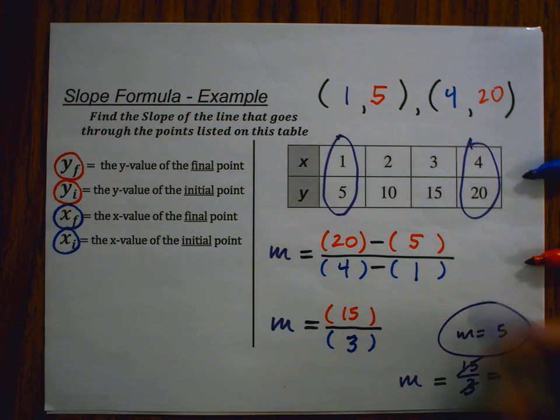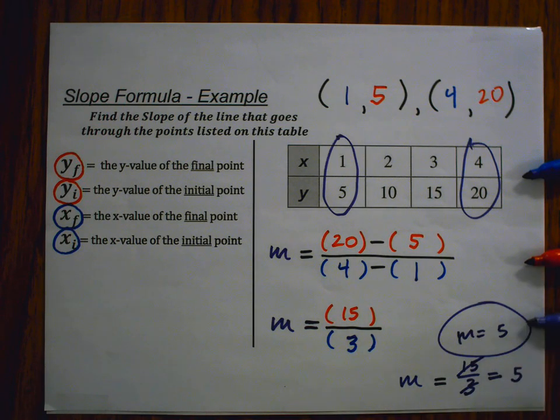This is your final answer. This is the slope of the line that goes through the points listed on the table. Try some questions on your own. Please let your teacher know if you have any questions or concerns.